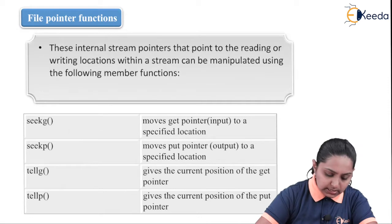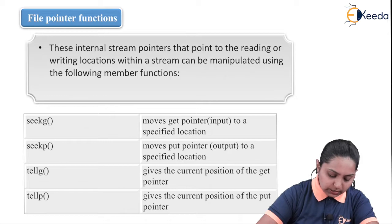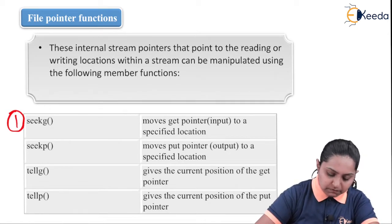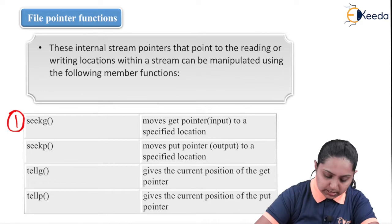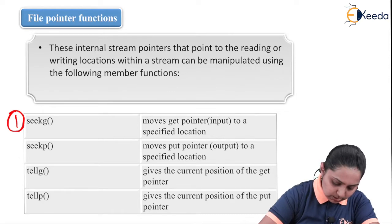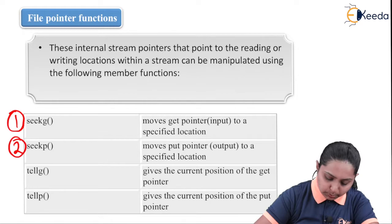The internal stream pointer that points to the reading or writing location within a stream can be manipulated using the following member functions. The first function is seekg, which moves the get pointer to the specified location. The next function is seekp, which moves the put pointer to a specified location.